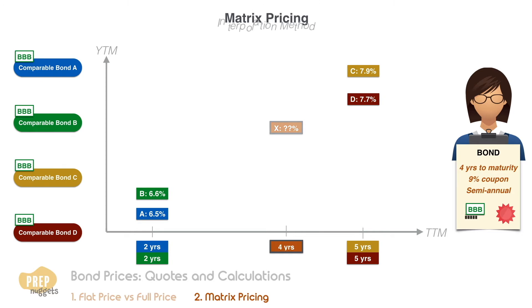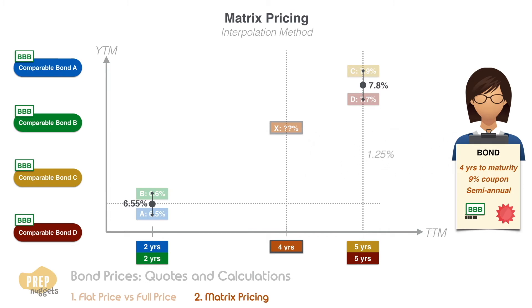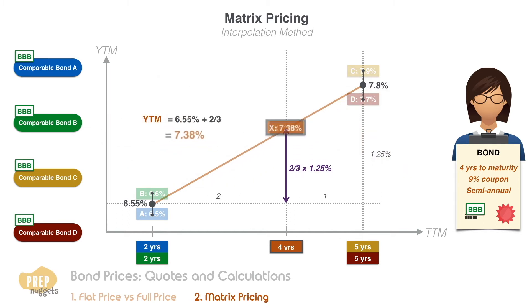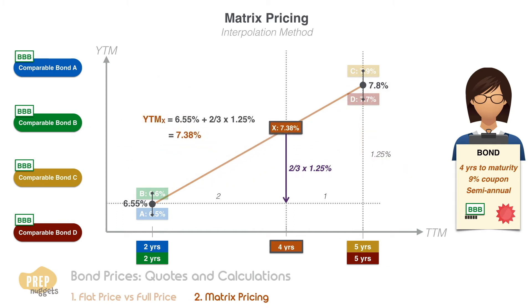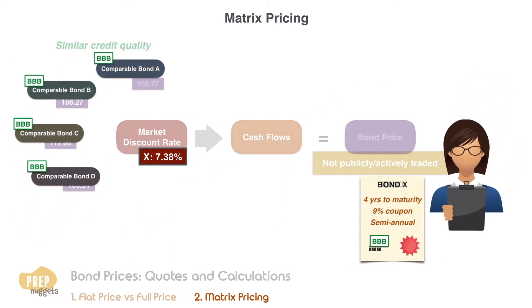One simple way is to use the interpolation method. We start by finding the average of the yields of bond A and bond B, which is 6.55%, and bond C and D, which is 7.8%. The difference between the two yields is 1.25%. Since the relationship is linear, the increase in yield for the four-year over the two-year should be two-thirds of 1.25%. The yield to maturity for bond X should therefore be 6.55% plus two-thirds of 1.25%, which is 7.38%. Now that we have the market discount rate, we can apply it to the bond's future cash flows to estimate its value.